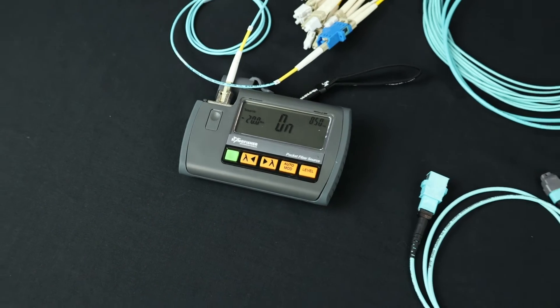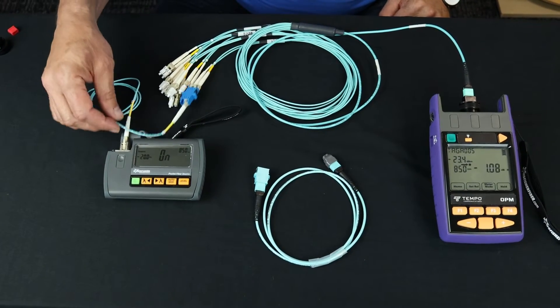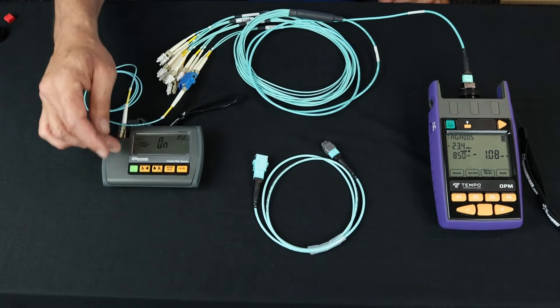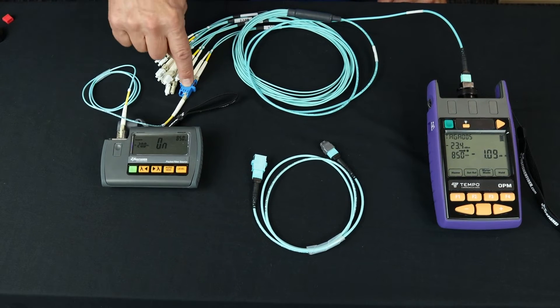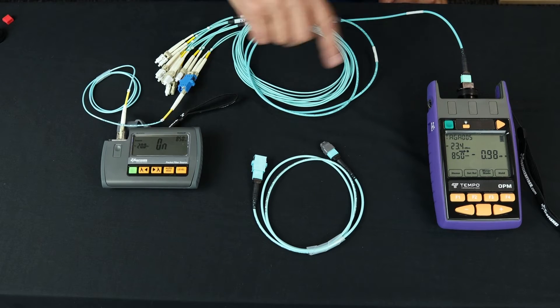So this is my reference setup. I have a stable jumper here coming from my multimode light source. I've got this set to 850 and I'm plugged into lane one on this 12 fiber breakout.